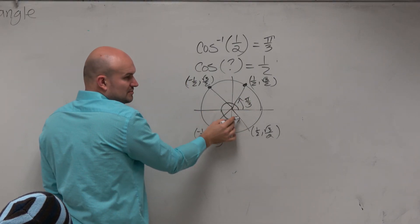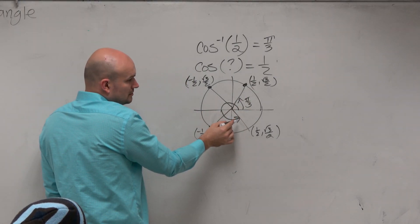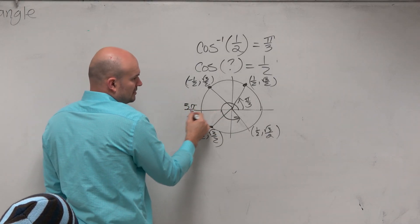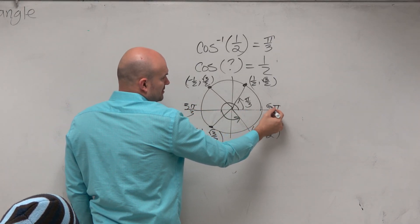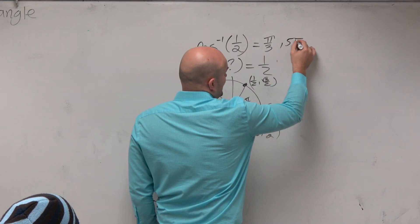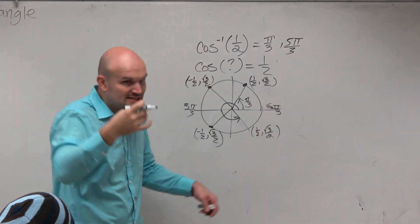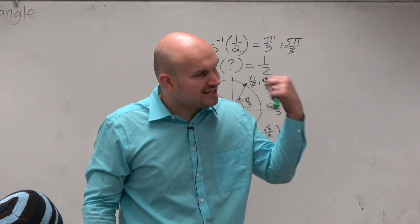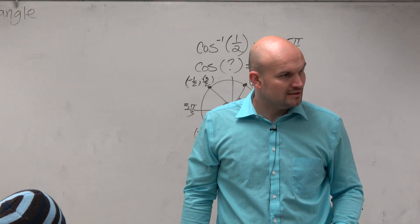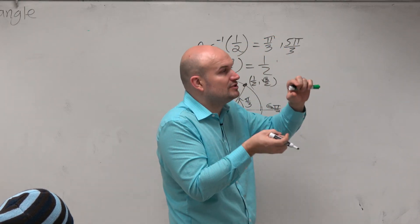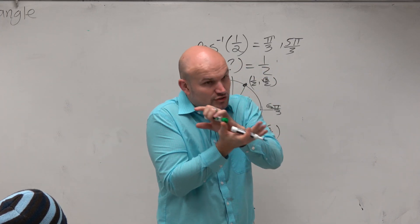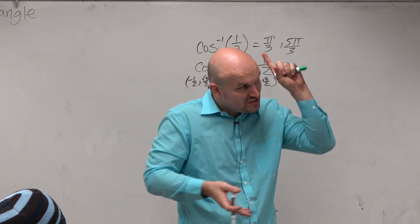And then this other angle — well, this is 3 pi over 3, this is 6 pi over 3. So if it's pi over 3 short of 6 pi over 3, then it has to be 5 pi over 3. But again, guys, this is an inverse function. You plug that into your calculator, your calculator is not going to spit out two answers. We have to understand that the cosine inverse function has a restricted range, or the cosine function is restricted to only give us one answer.